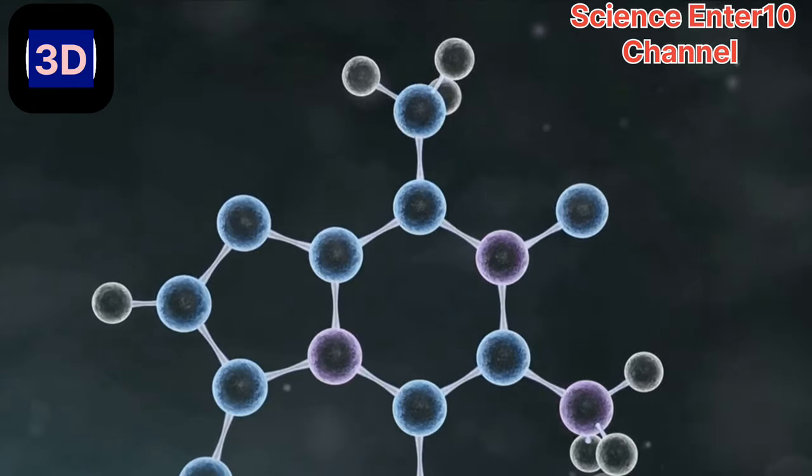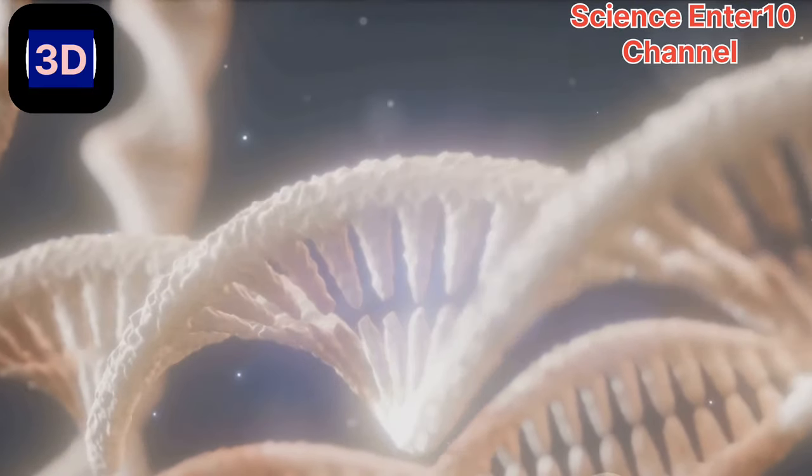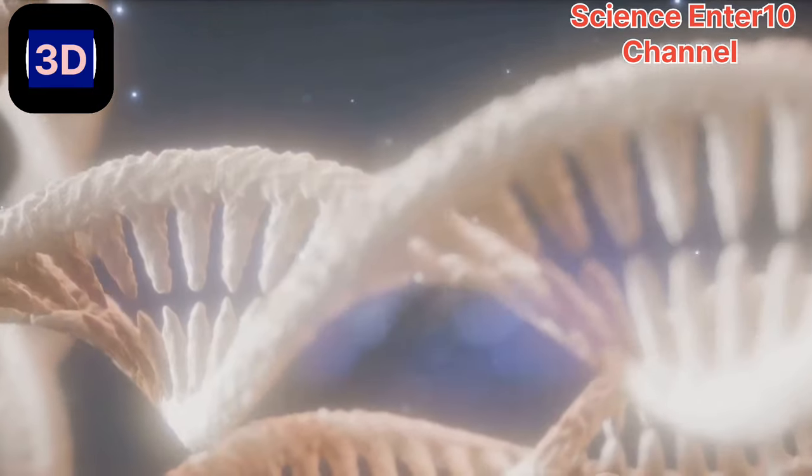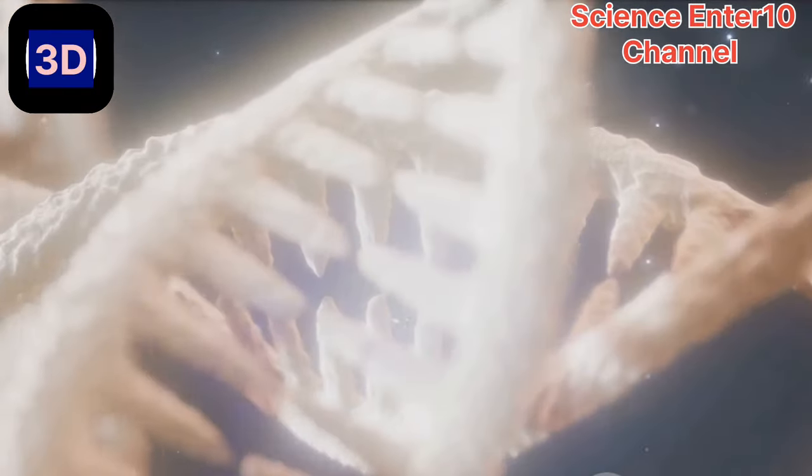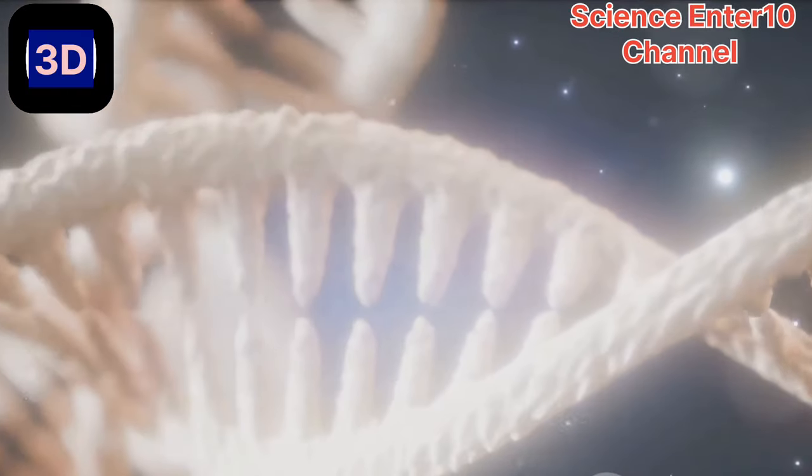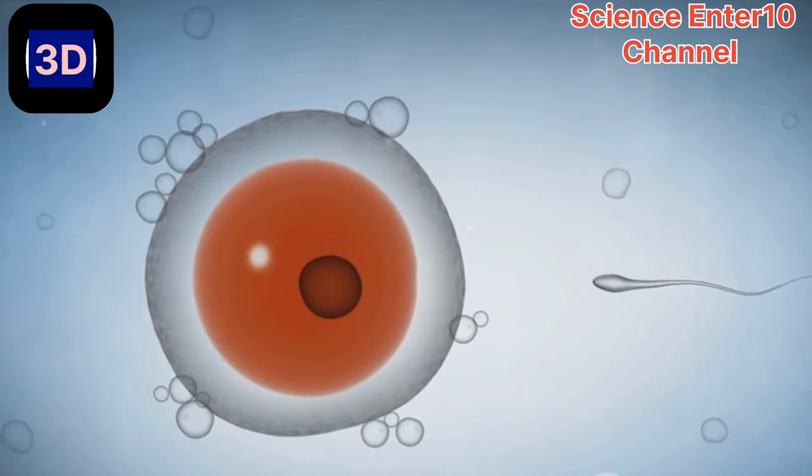This structure, made of microtubules, originates from two opposite ends of the cell, known as centrosomes. Like invisible puppet strings, the spindle fibers reach out and attach to the chromosomes, ready to orchestrate their movement.